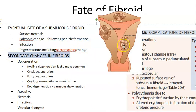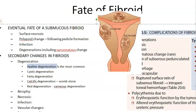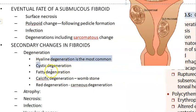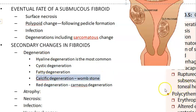Secondary changes in fibroids — what can happen to a fibroid? It can undergo hyaline degeneration, cystic degeneration, fatty degeneration, and calcific degeneration. Calcific degeneration means the whole fibroid becomes a calcified mass. This usually happens to subserosal fibroids and is also called a 'womb stone.' Red degeneration is also a type.